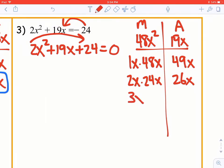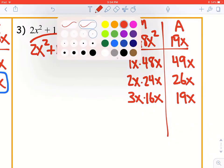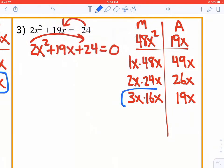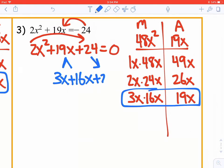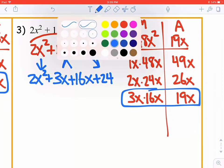Then 3x times 16x gives us 48. And then when we add, they give us 19x. So those are the numbers we need. So 3x times 16x. So we need to rewrite 3x plus 16x over here. Bring down our last term, and bring down our first term. And then we're going to finish by grouping.